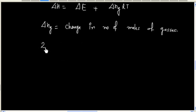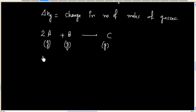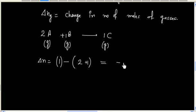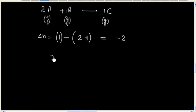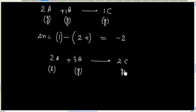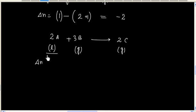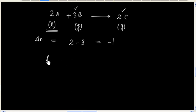For example, for the reaction 2A(g) + B(g) → C(g), ΔNg = 1 − (2+1) = −2. For another reaction 2A(l) + 3B(g) → 2C(g), we do not consider the liquid, so ΔNg = 2 − 3 = −1.